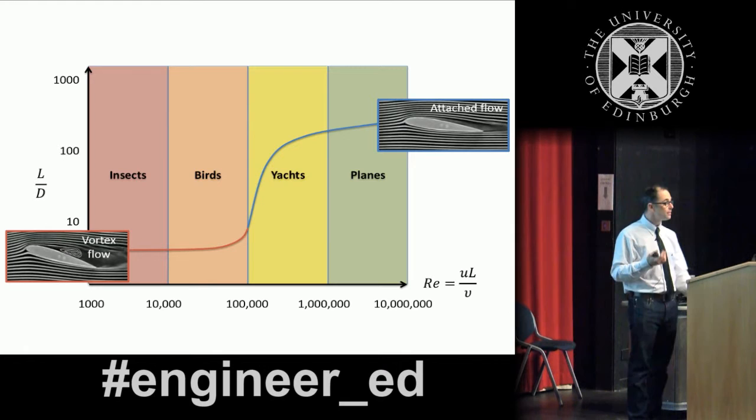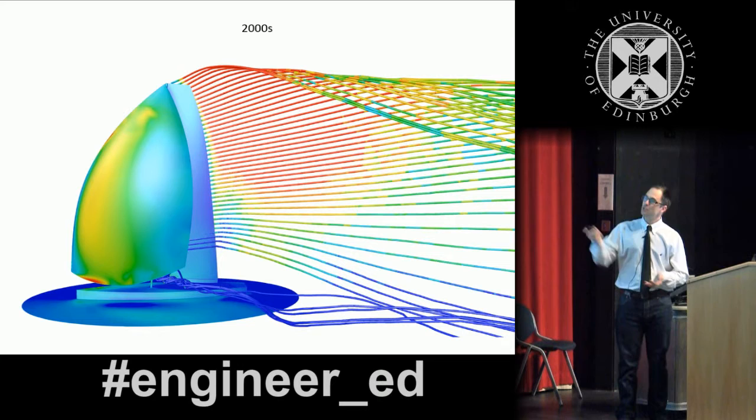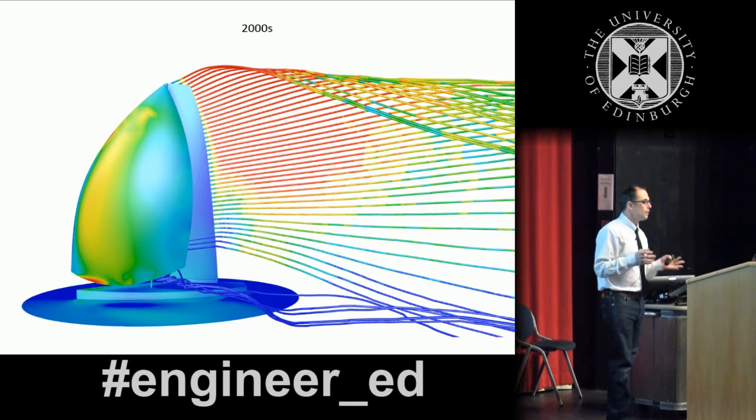So the question we have now, do our sails exploit these mechanisms or they don't? So what happened when I was doing my PhD, it was not 2000 but it was in that decade, and this one is an example of what during those years we were capable to do.